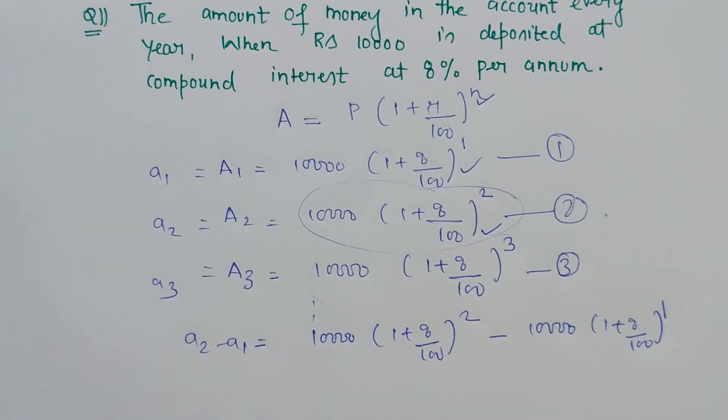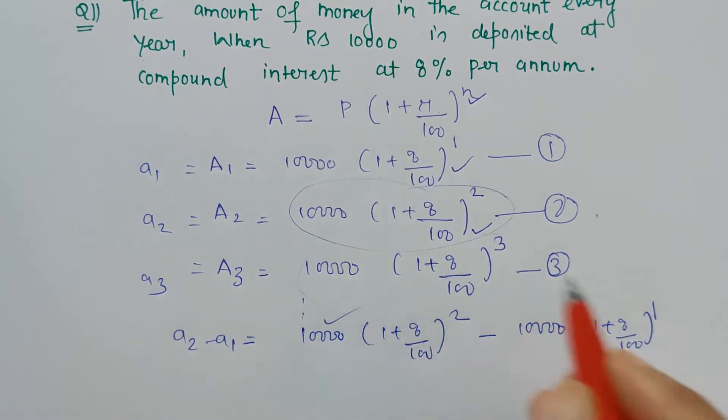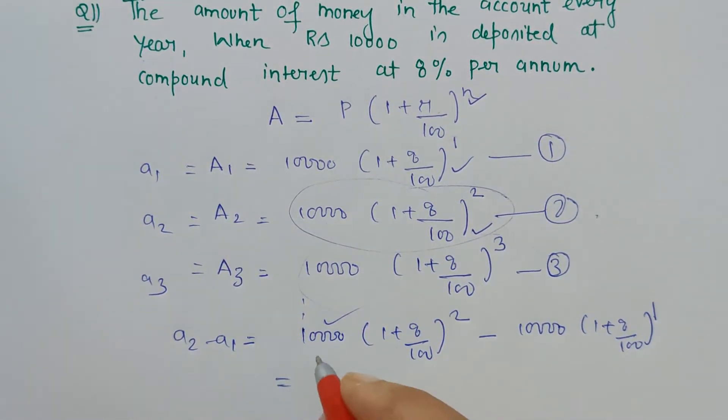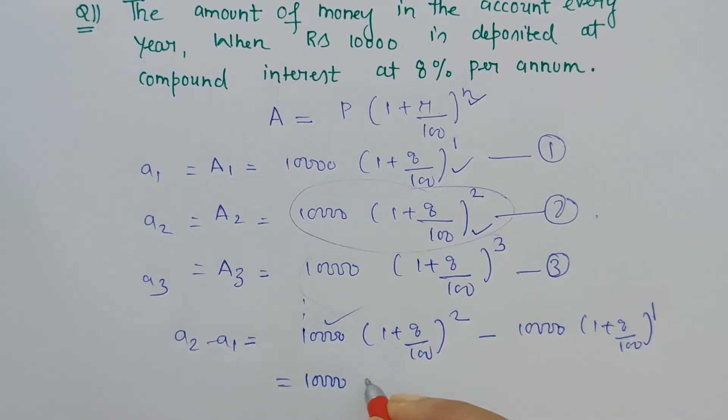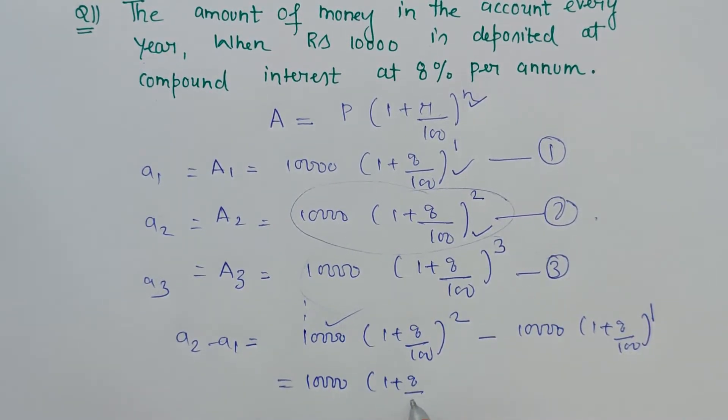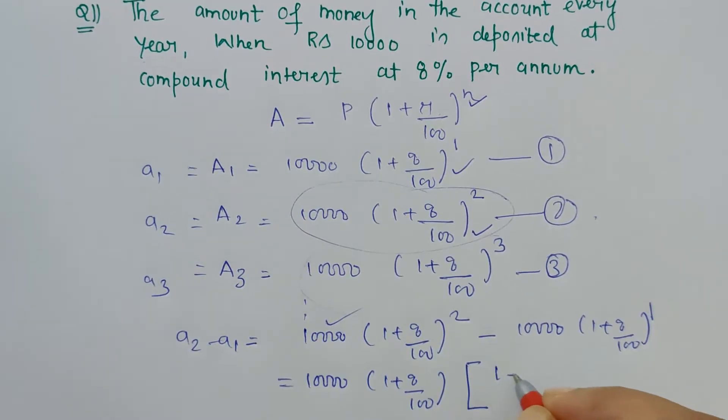10,000(1 + 8/100)^2 - 10,000(1 + 8/100)^1. So we can take 10,000 in bracket—this is common, isn't it? So 10,000(1 + 8/100) can be taken outside.